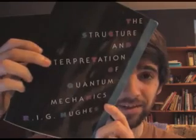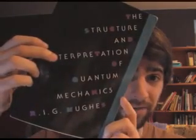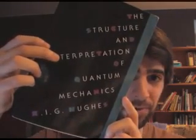So I'm going to be using, kind of as my guide, this book, The Structure and Interpretation of Quantum Mechanics by who we might affectionately call Rigg Hughes. Not a bad book. It was the textbook for a course that I took last year on the philosophy of modern physics.